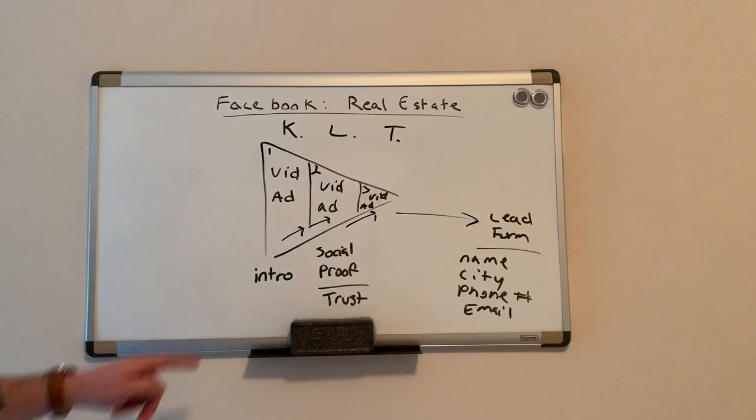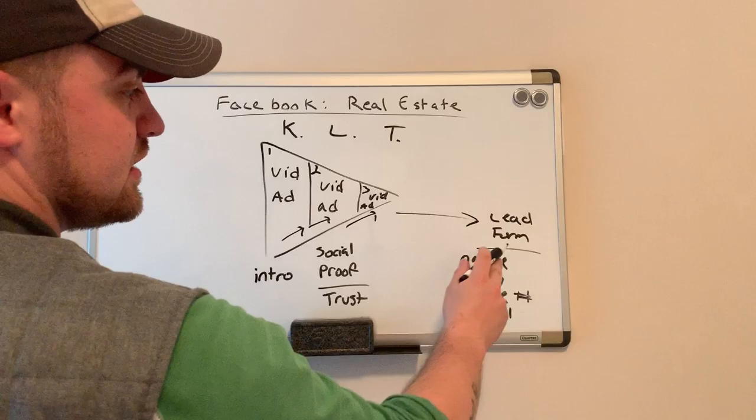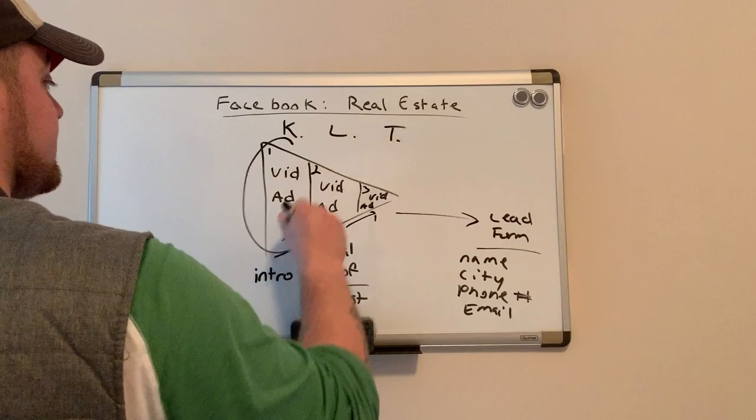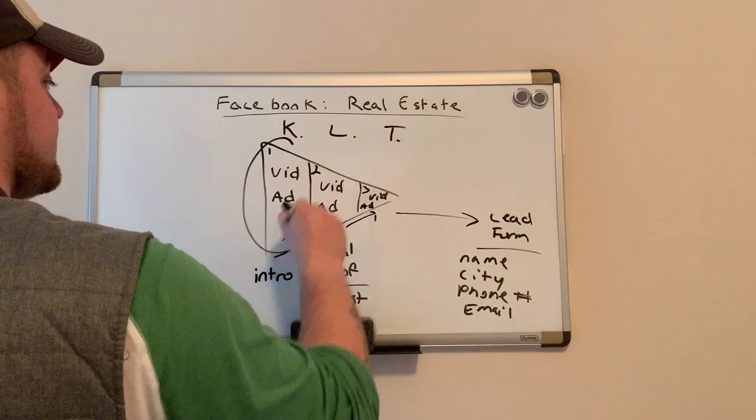So again, you put one video ad out that says, hey, how's it going? You put a second one out that shows social proof, some kind of reason why they should have trust for you and why they should like you. And then the third one is the call to action that gets them to fill out a form so you can actually meet with them and you've built the relationship through Facebook and you've done it the right way. Most people are putting out this first ad and they're hoping that a customer comes from it and it just doesn't work.